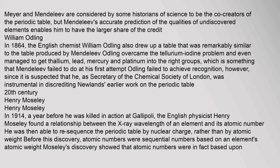In 1864, English chemist William Odling also drew up a table remarkably similar to Mendeleev's. Odling overcame the tellurium–iodine problem and managed to get thallium, lead, mercury and platinum into the right groups — something Mendeleev failed to do at his first attempt. Odling failed to achieve recognition, however, since it is suspected that he, as Secretary of the Chemical Society of London, was instrumental in discrediting Newlands's earlier work on the periodic table.